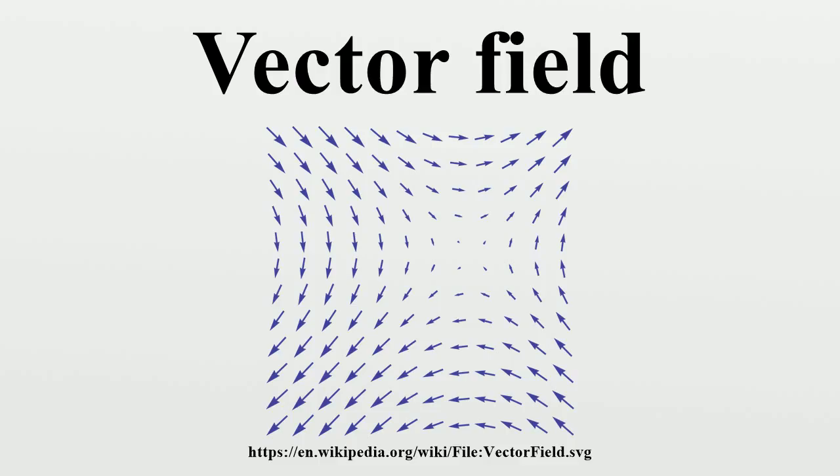The line integral is constructed analogously to the Riemann integral and it exists if the curve is rectifiable and the vector field is continuous. Given a vector field V and a curve γ parametrized by [a,b], the line integral is defined as ∫ᵧ V·ds.